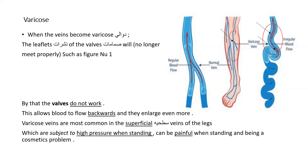And here there will be some backwards flow — the blood flow direction must be from down to up, like that, but here we have some backwards blood flow and a lot of curves instead of straight line veins. This is varicose veins.